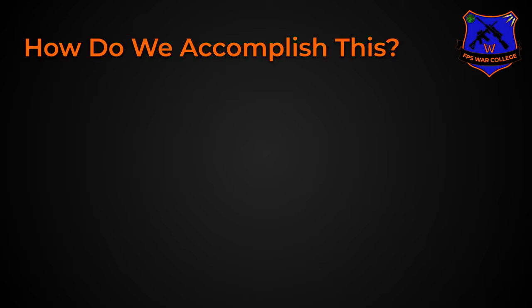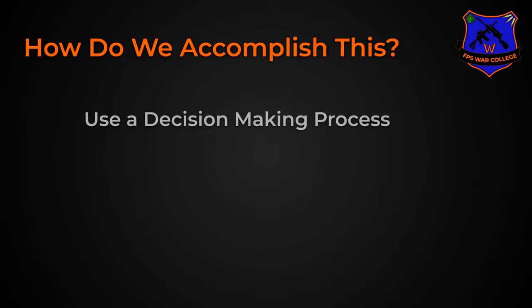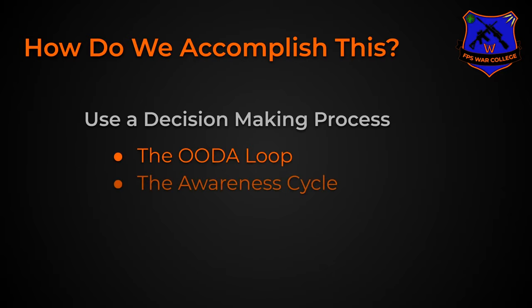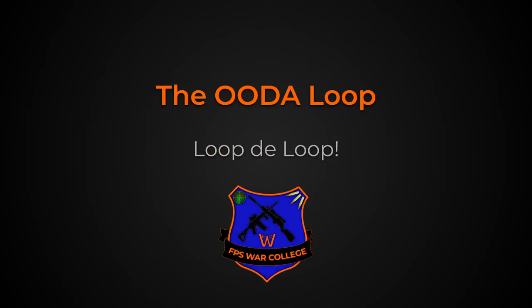How do we accomplish all of this? We are going to use a decision-making process. I'll cover two: the OODA loop and the awareness cycle. Let's talk about the OODA loop first.